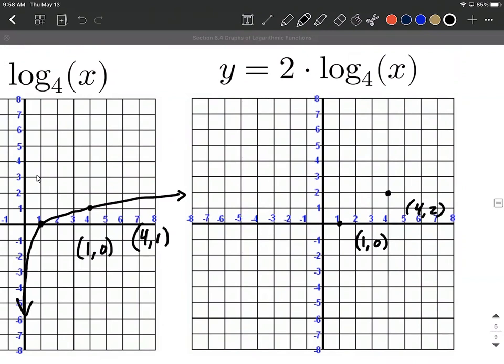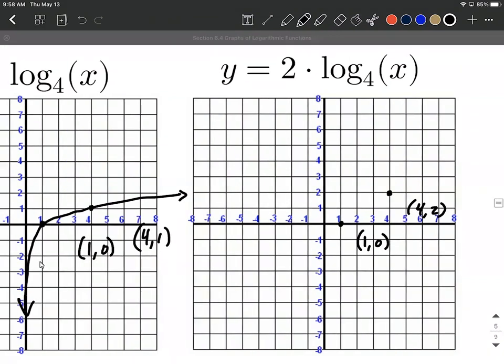Now, this does not change our vertical asymptote. It's still going to be at the y-axis when x equals zero. Just kind of sketching this in, what's going to happen is this is going to be a little bit taller and skinnier. It's more difficult to see with logarithmic functions, but basically each one of these points is going to be twice as far away from the x-axis as the previous point. So it's going to look a little bit taller, steeper, I guess maybe is a good way to put it on this one.